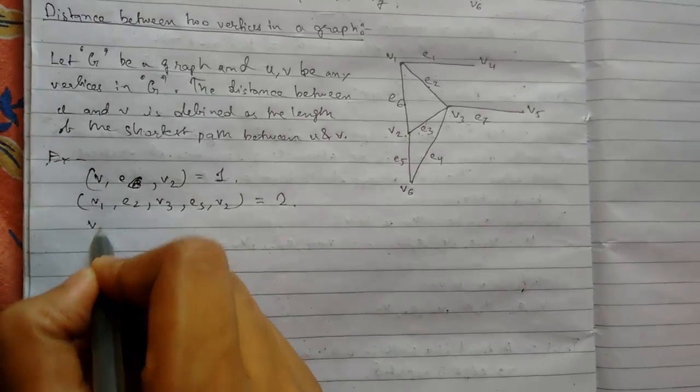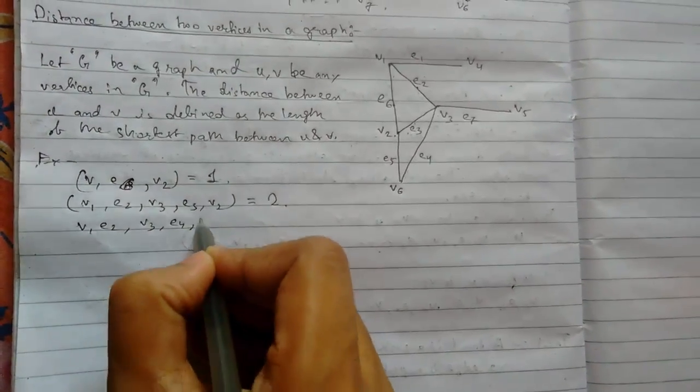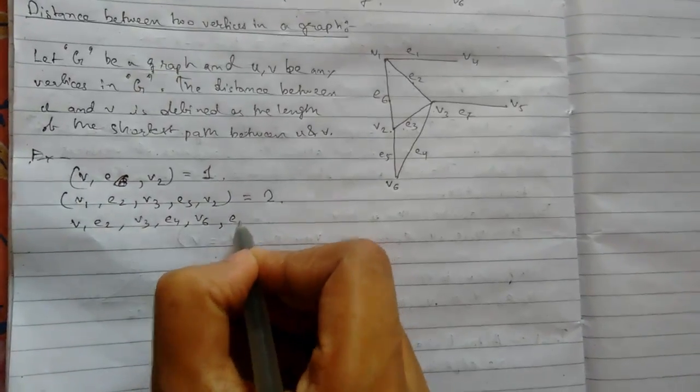And something like this: v1, e2, v3, e4, v6, e5, v2.